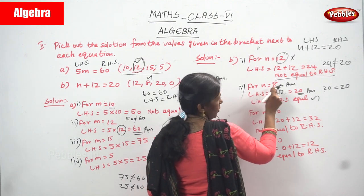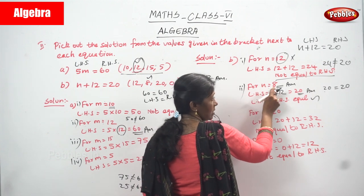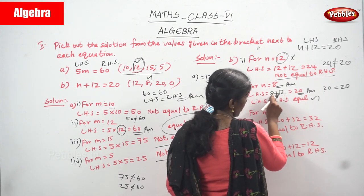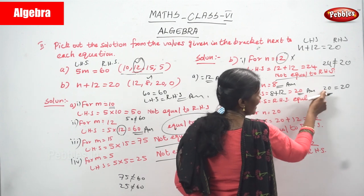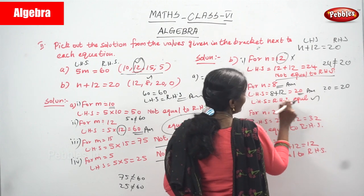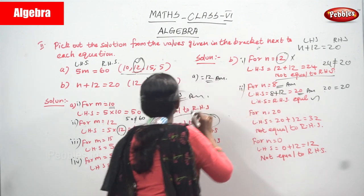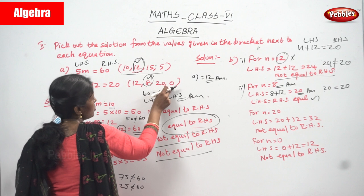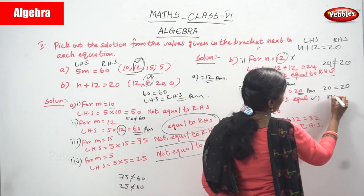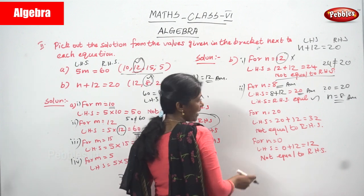So n equal to 8 is the right answer. It is a solution. For n equal to 8, substitute into left hand side: n plus 12 gives 8 plus 12, which equals 20. Left hand side equals 20 and right hand side is also 20, so both are equal. Therefore 8 is a solution — that is why I circled it. The n value is equal to 8.